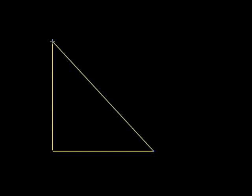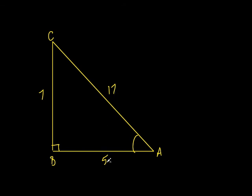Let's draw another right triangle — not 30-60-90, not 45-45-90, just a right triangle. We have no idea what the angles are. I'll still call it A, B, and C. What if I put some numbers in here — like 7, 5, and... let's see, can it even be 17? No, because the two shorter sides have to add up to be bigger than the longest side. So I'll just call it 11. Just making up numbers here.